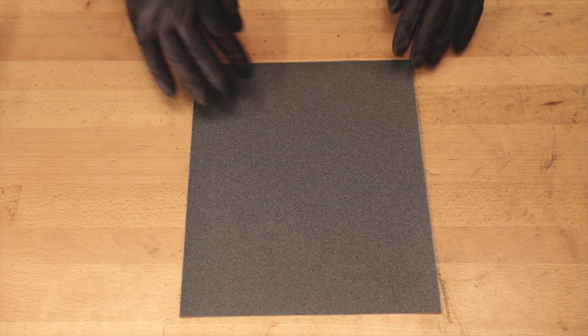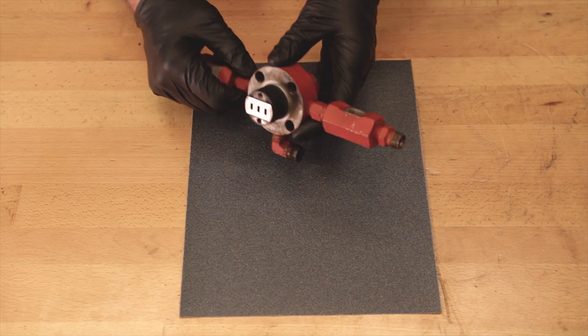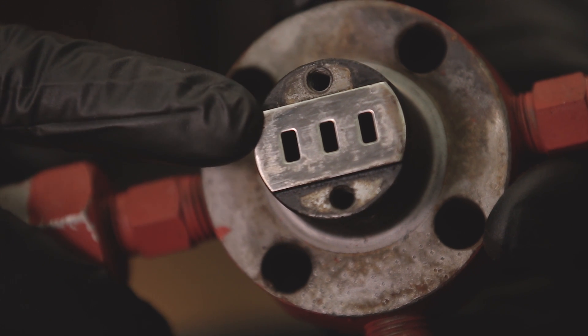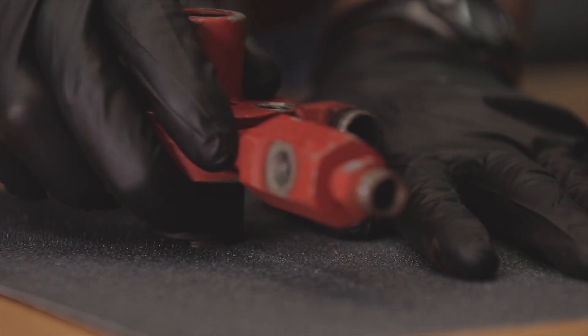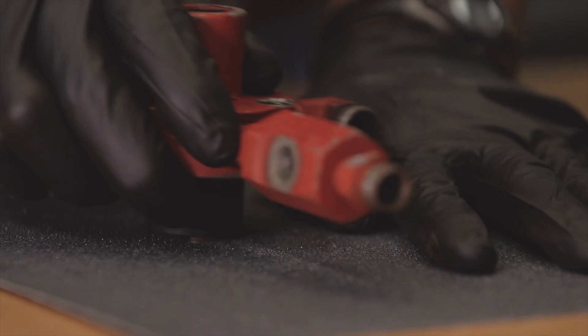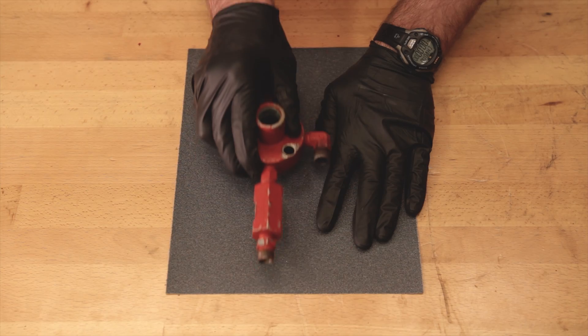Use 220 grit sandpaper to buff out any gouges or deep scratches on the face of the port plate. Apply pressure keeping the port plate even on a flat surface. Go back and forth three to five times and make sure that all of the scratches have disappeared.